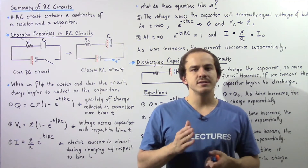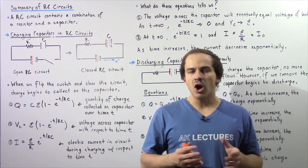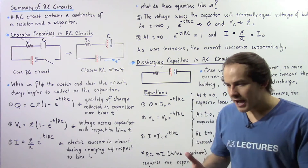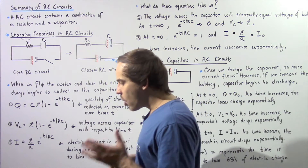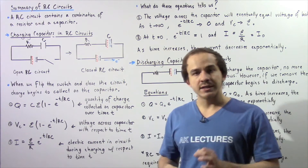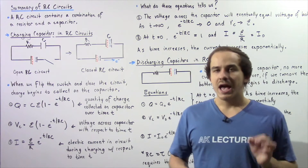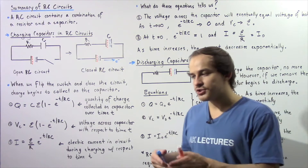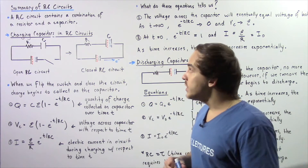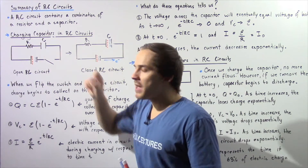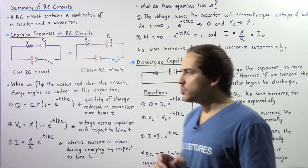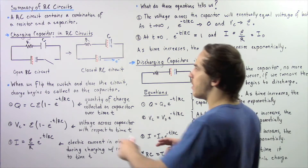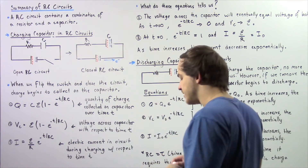In the previous several lectures we discussed RC circuits. Now let's summarize our results. An RC circuit is an electric circuit that consists of a capacitor as well as a resistor. There are two important things we use RC circuits for: we can use RC circuits to charge capacitors, and we can also use RC circuits to discharge capacitors. Let's begin by discussing charging capacitors in RC circuits.